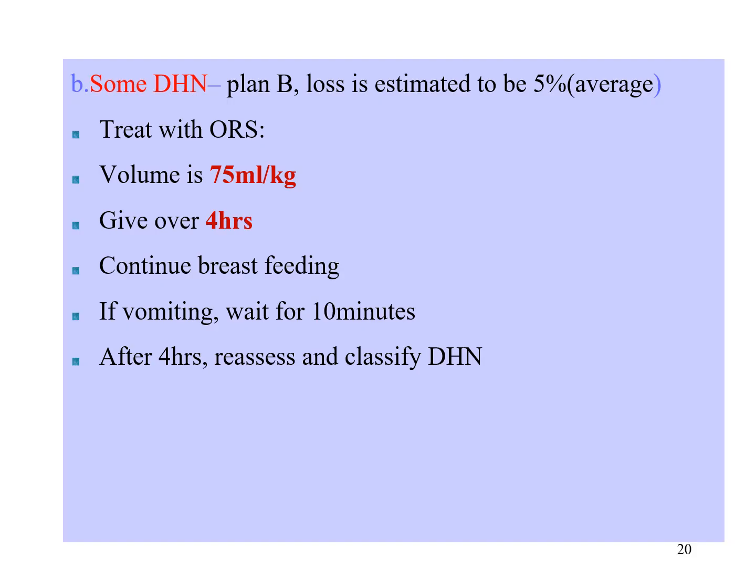For some dehydration, management follows Plan B. Give ORS 75 ml per kg over 4 hours, either by nasogastric tube or directly by mouth. Continue breastfeeding. If vomiting occurs, wait 10 minutes and retry. After 4 hours, reassess and reclassify the degree of dehydration.